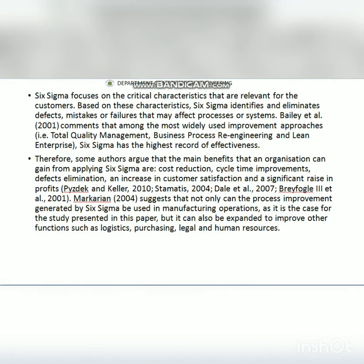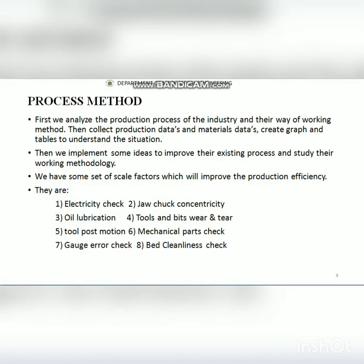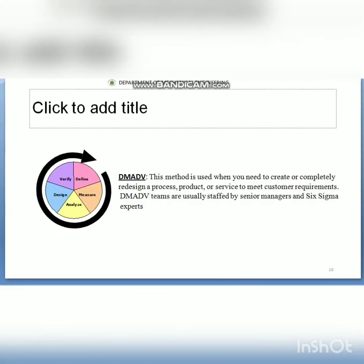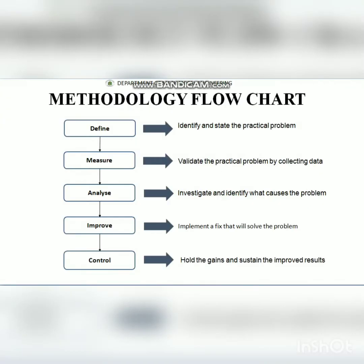We are going to see how we can implement this process as a flowchart of steps and procedures. The methodology used is the DMAIC cycle in the Six Sigma process: Define, Measure, Analyze, Improve, and Control.